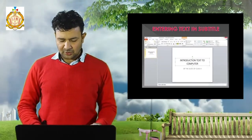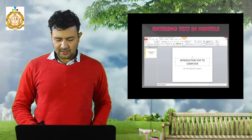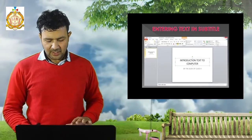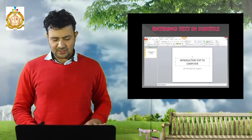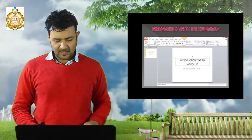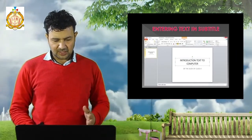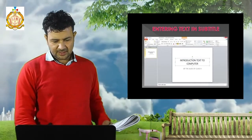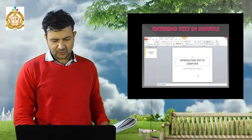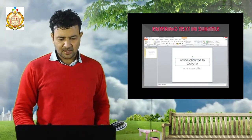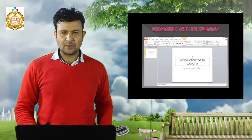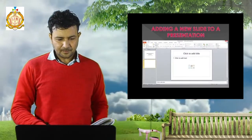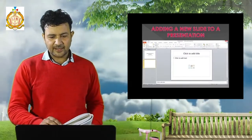Next, entering text in a subtitle. There is a title and below it is the subtitle. The steps to put data in the subtitle: click on the subtitle text placeholder and type the text you want, for example 'By students of fourth class.' You can put anything you want in the subtitle.